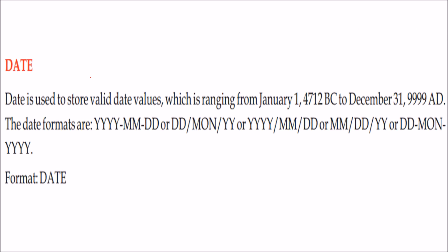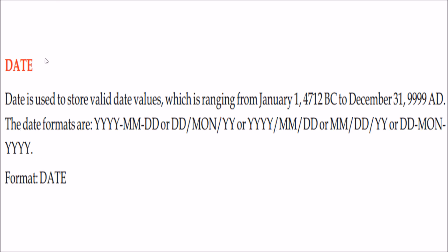Date data type is used to store valid date values. It ranges from early BC to far AD dates. Various date formats include year-month-date, date-month-year, and the format DD-MON-YYYY using oblique separators.